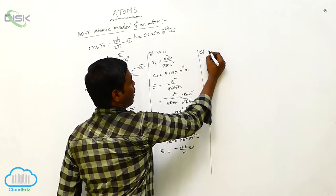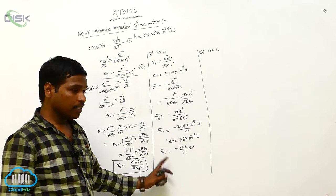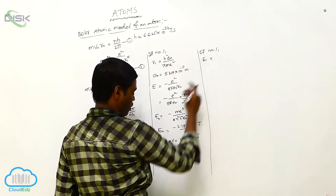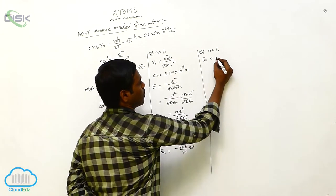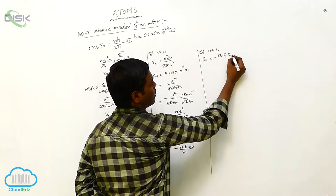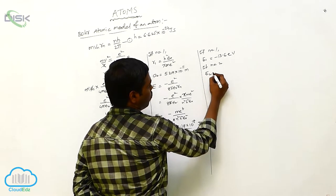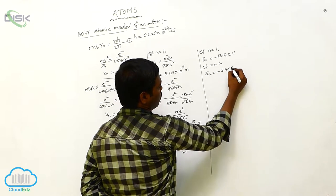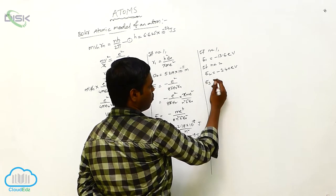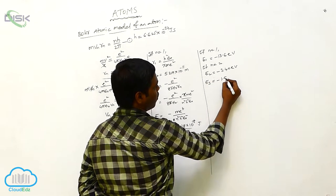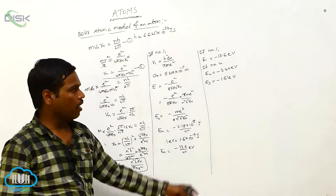If we write n = 1, we get E1 = −13.6 electron volts, which is the lowest state. If n = 2, then E2 = −3.40 electron volts. If n = 3, then E3 = −1.51 electron volts. Going on, the energy values continue increasing toward zero.